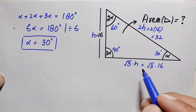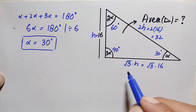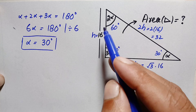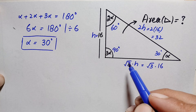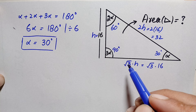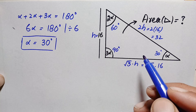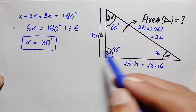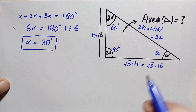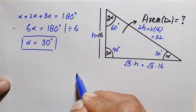Now we have the base and the height of the triangle, so we can easily find the area using the formula: Area = ½ × base × height.